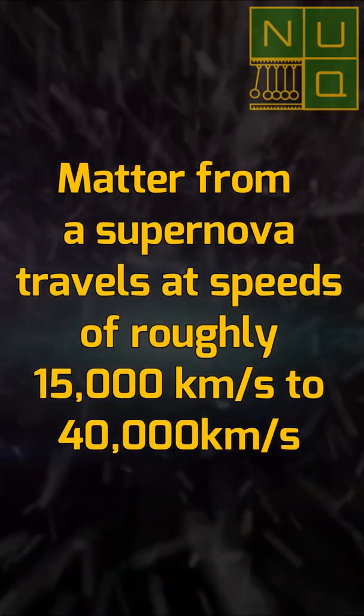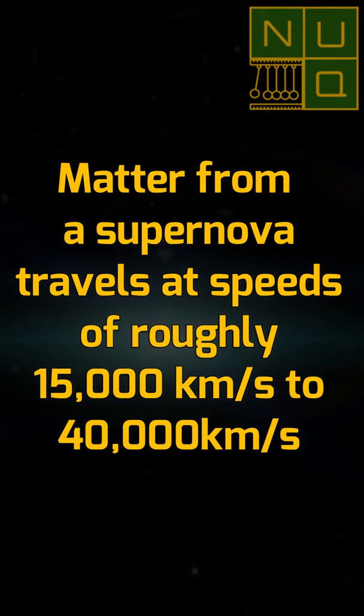When a star goes supernova, it jettisons matter into space at speeds in excess of 15,000 kilometres per second, roughly 5% of the speed of light.